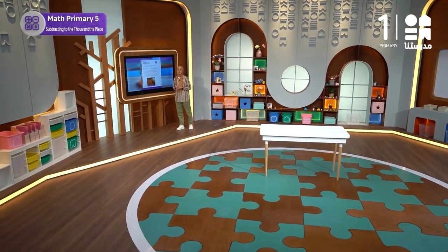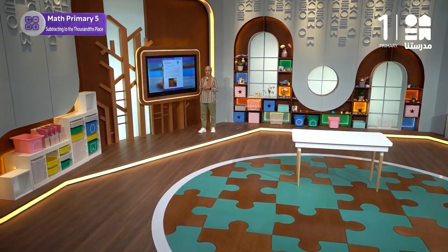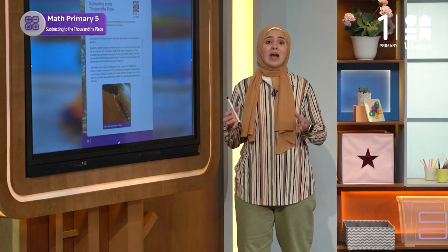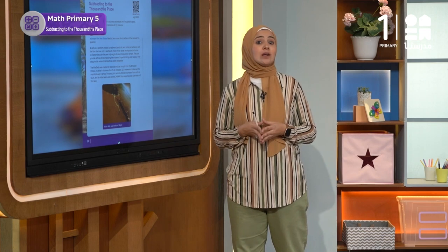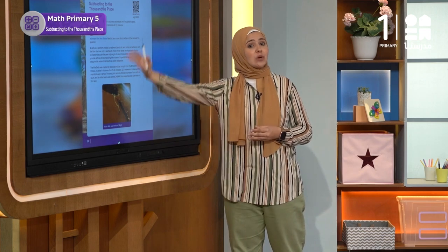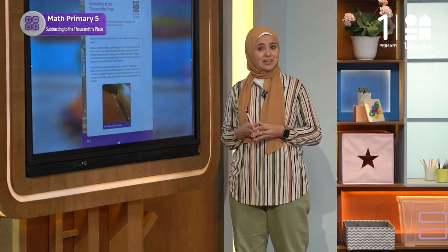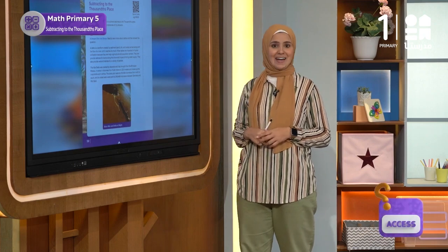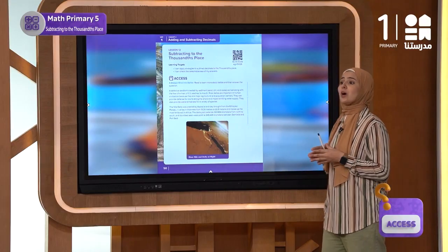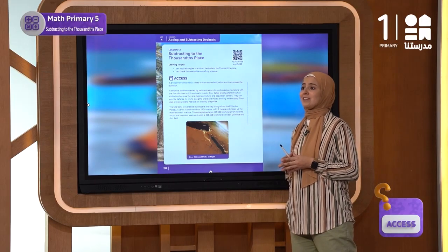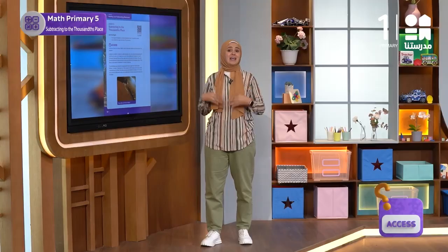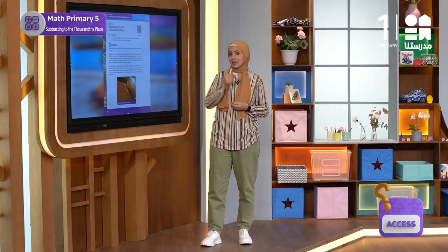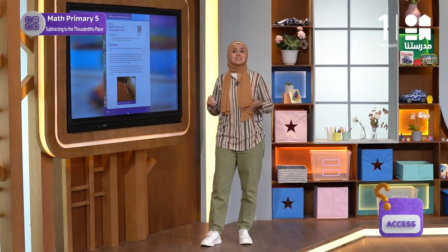We have learned why we name the area around the Nile the Nile Delta, and we have also learned where it begins. But how was the delta formed? This is what we will learn in a deeper dive into deltas in activity six. We are going to watch a video — follow the written text, take notes of things that represent any numbers in the video, and don't forget to take notes. Let's start.